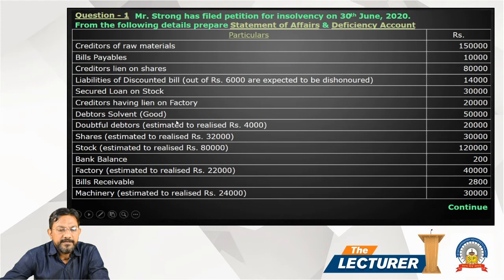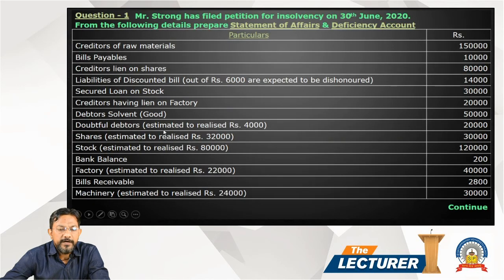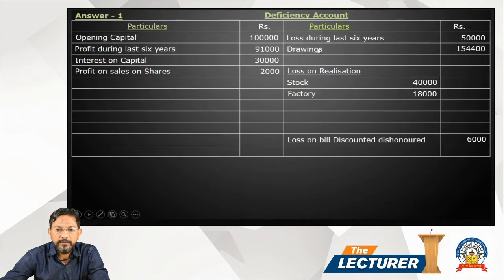In the statement of affairs, assets: book debts List F — good debtors 50,000, realized 50,000. Doubtful debtors: estimated to realize 4,000, book value 20,000. Statement of affairs shows doubtful debtors 20,000, realizable value 4,000. Difference is 16,000 loss — this goes to deficiency accounts as bad debt or book debt loss as per List F: 16,000.